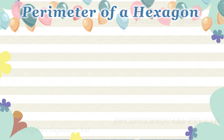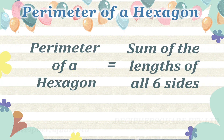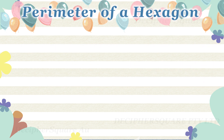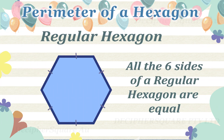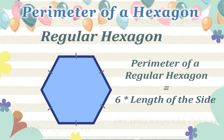The perimeter of a hexagon is equal to the lengths of all six sides added together. In the case of a regular hexagon, all six sides are equal, and so the formula to calculate the perimeter of a regular hexagon is six times the length of each side.